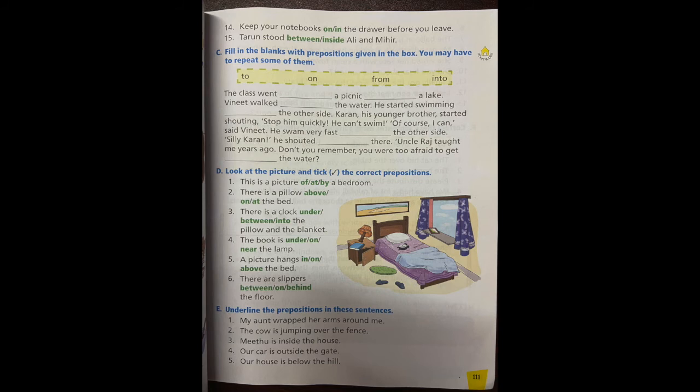Six: there are slippers dash the floor. So where are the slippers? On the floor. Put a tick on on. Now look at section E: underline the prepositions in these sentences. So each sentence has a preposition. We have to find it out and underline them.